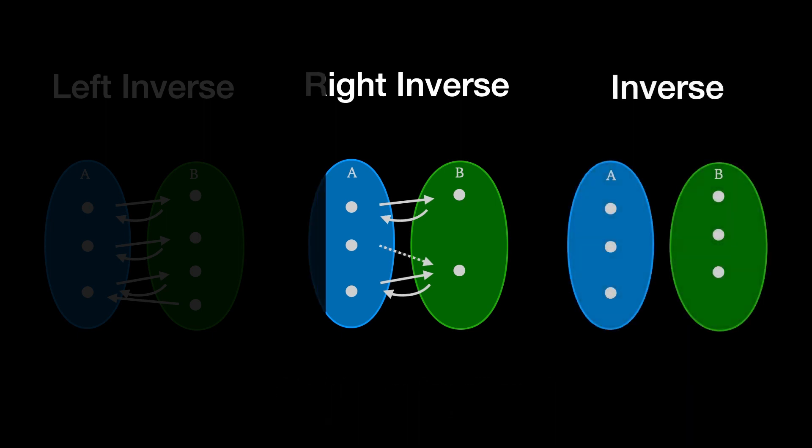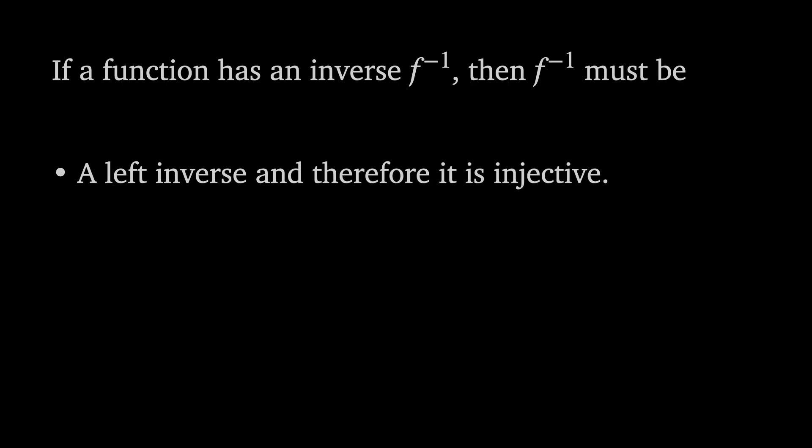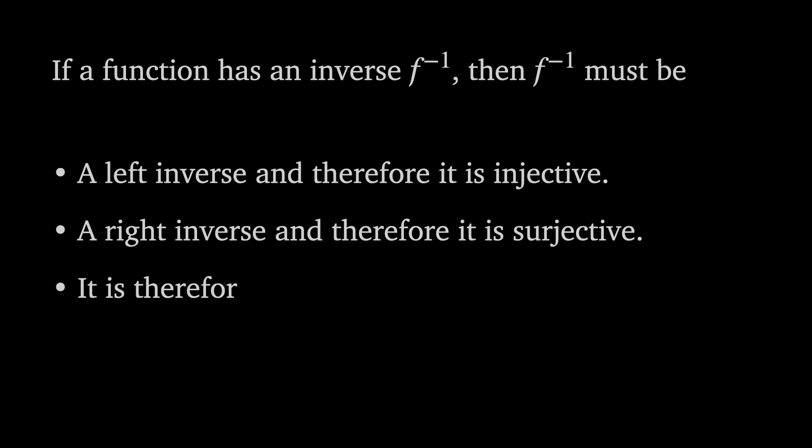Finally, an inverse function g must be both a left and a right inverse of f. To summarize, if a function has an inverse f^(-1), then it must be a left inverse, and therefore it's injective, and a right inverse, and therefore it's surjective. But if it's both injective and surjective, it's therefore bijective.